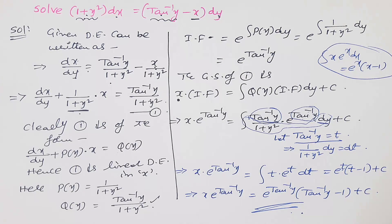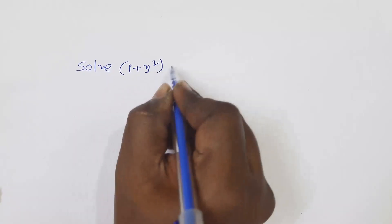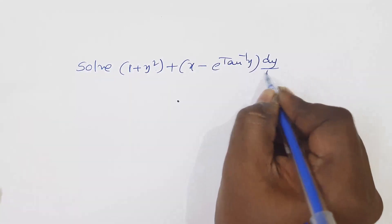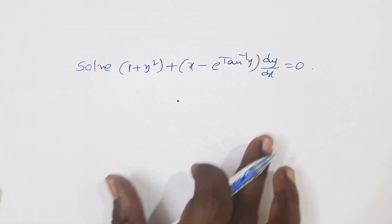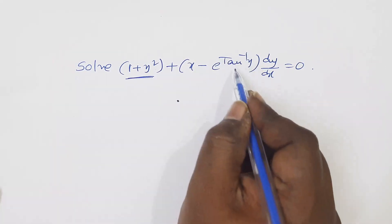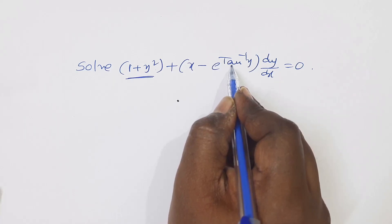Let us take a look at the problem. Solve: (1 + y²) + (x minus e^(tan⁻¹y)) times dy/dx equals 0. This problem is very important. The equation is linear in x, since 1 plus y squared and e^(tan⁻¹y) are functions of y only.